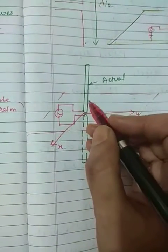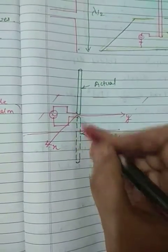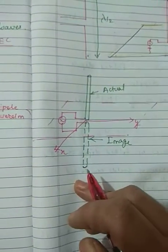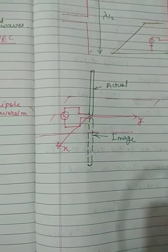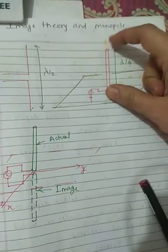According to image theory, this is the actual monopole and its image is below the ground plane. So radiation pattern will be the same as that of dipole. So this is the main advantage of monopole: length is reduced to half.